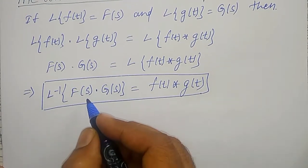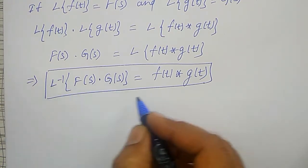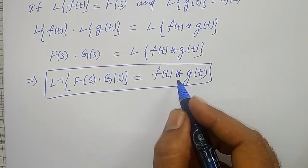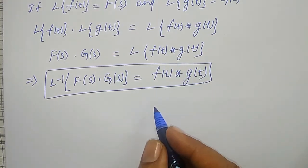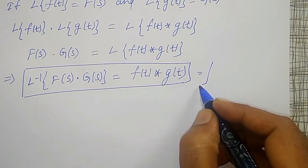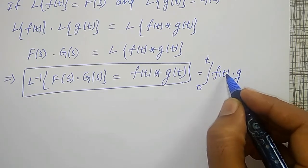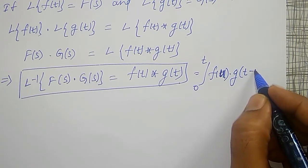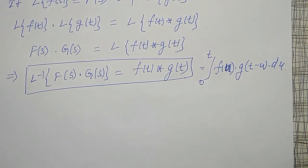Whenever two signal functions are multiplied, their inverse Laplace transform can be calculated using convolution. This is nothing but the convolution of two functions defined previously, which is equal to integration from 0 to t of f of u into g of t minus u du. Just using this, I can find the inverse Laplace transform of the product of two functions.